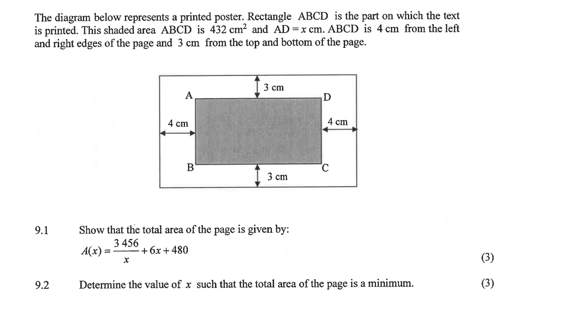The diagram below represents a printed poster. Rectangle ABCD is the part on which the text is printed.